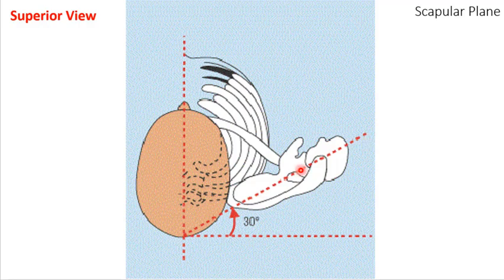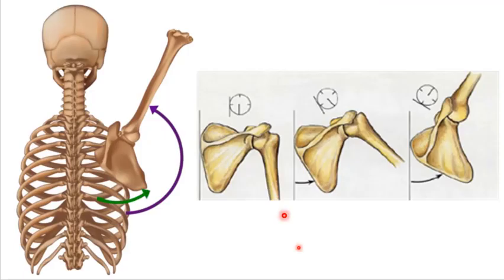All the movements we just talked about — flexion, extension, abduction and adduction — we looked at the humerus moving relative to the scapula. But in reality, the entire complex is moving. The scapula is always adjusting itself so it has maximal relationship between the head of the humerus and the glenoid fossa.